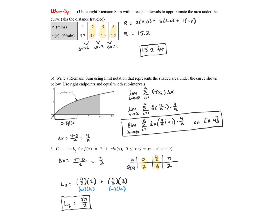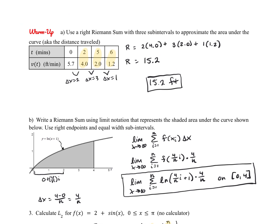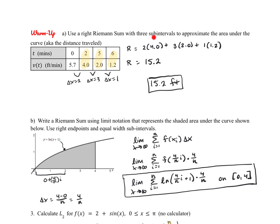Go ahead and check your work here. For the first part, you're doing a Riemann sum with three subintervals using the right endpoints, so you're starting with this y value for your first height. You'll notice the width of each rectangle is not uniform — delta x is 2, then 3, then 1 — so you do need to calculate each individual area separately. The total distance traveled is 15.2 feet.